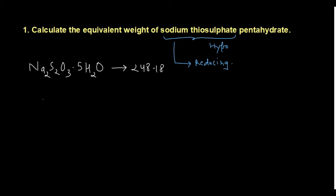Here is a simple trick: all those species which have an n factor of one will always have the same molecular weight and equivalent weight. Sodium thiosulphate has an n factor of one, so its molecular weight equals its equivalent weight. But let me show you how to solve the question properly.